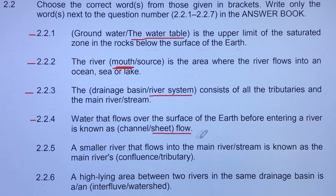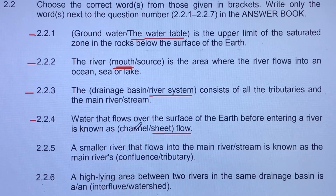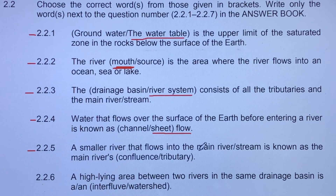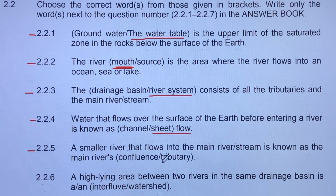Sheet flow occurs before entering a river. A channel, on the other hand, is water running through inside the river bed. Moving to 2.2.5: a smaller river that flows into the main river or stream is known as a confluence or tributary. It is a tributary.